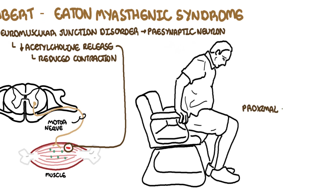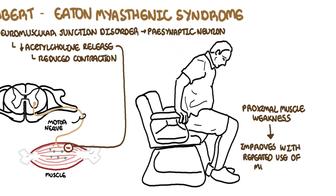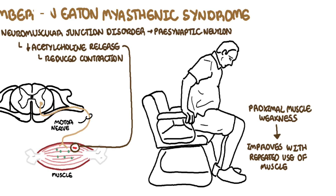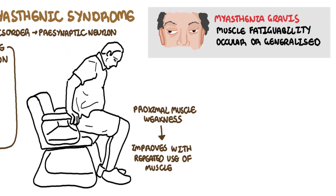Lambert-Eaton Myasthenic Syndrome causes muscle weakness, which interestingly improves with activity, unlike the other neuromuscular junction disorder, myasthenia gravis, which manifests in muscle fatigability — the more you use the muscle, the weaker it gets. Myasthenia gravis can be divided into ocular myasthenia and generalized myasthenia.